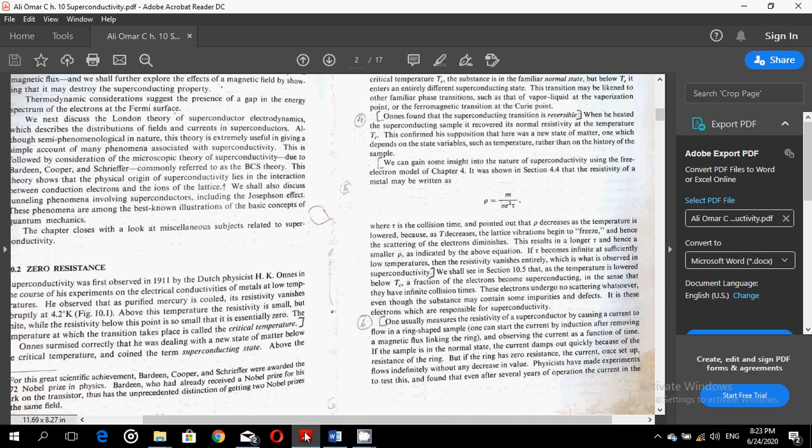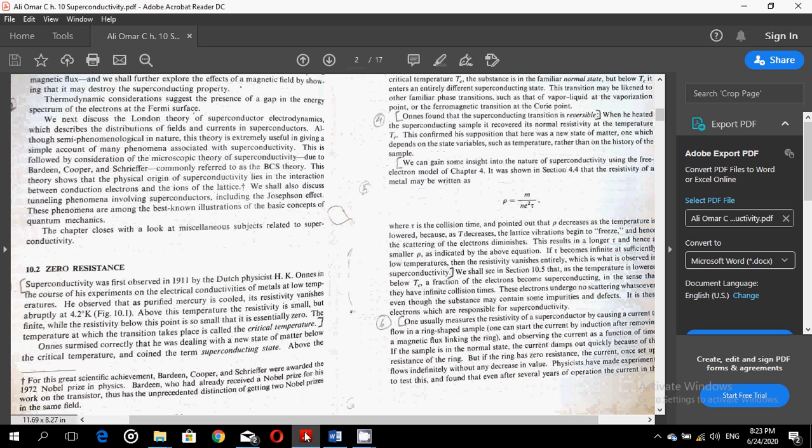What is zero resistance? Let us discuss about zero resistance here. Superconductivity was first observed in 1911 by the Dutch physicist H. K. Onnes in the course of his experiments on the electrical conductivities of metals at low temperatures.